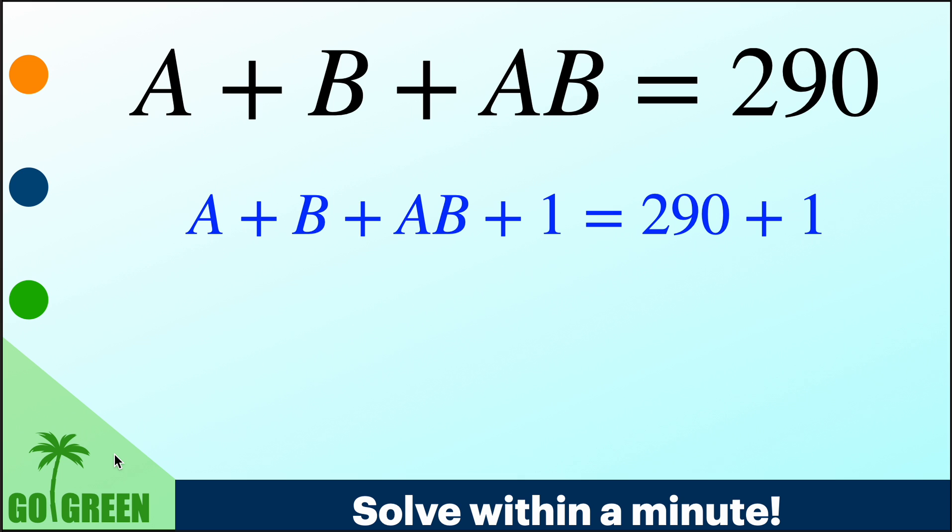So what it becomes, if we simplify, on the right it is 291, but on the left it is A plus 1 into B plus 1. So basically, now 291 must be equal to A plus 1 into B plus 1.